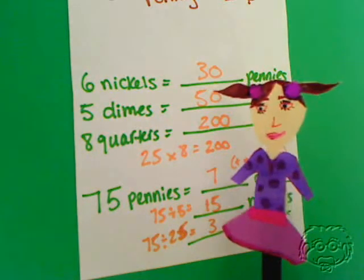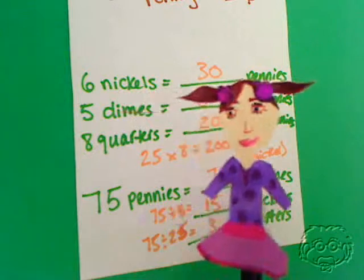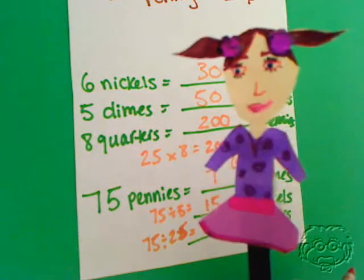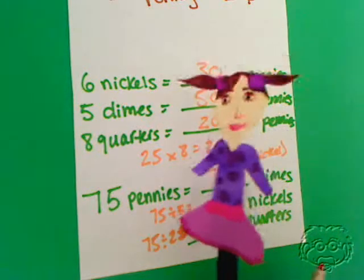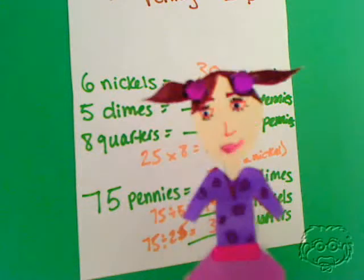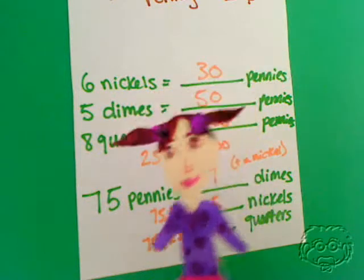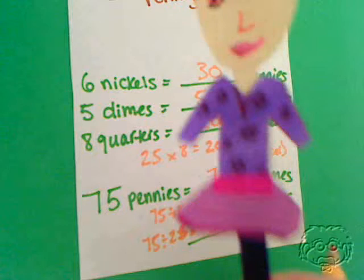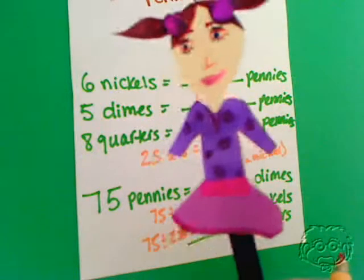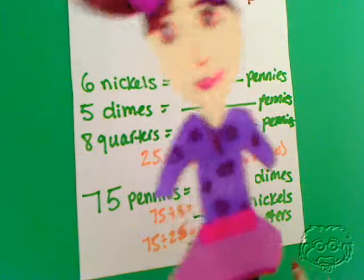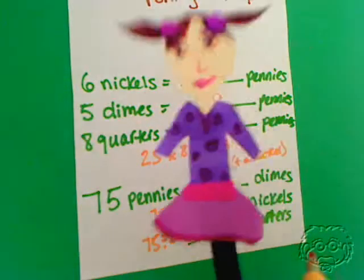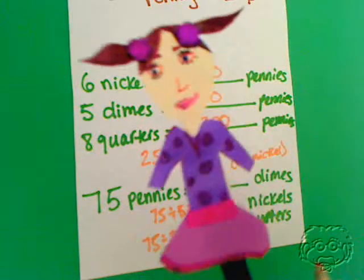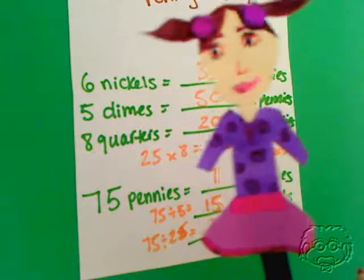Guys, I know that seems really complicated, but it's not. Just remember: a nickel is worth 5 cents, a dime is worth 10 cents, a quarter is worth 25 cents, and a penny is worth 1 cent. When you know those values, it's a lot easier to convert between all of these. Why don't you try it? Good luck — I'll talk to you later.